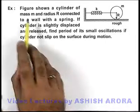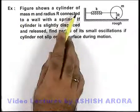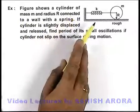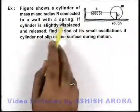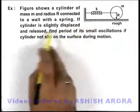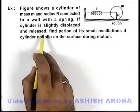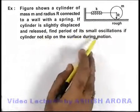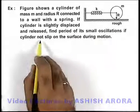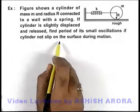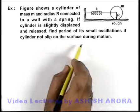In this example we are given that figure shows a cylinder of mass m and radius r connected to a wall with a spring. If the cylinder is slightly displaced and released, we are required to find the period of its small oscillations if the cylinder does not slip on the surface during motion.